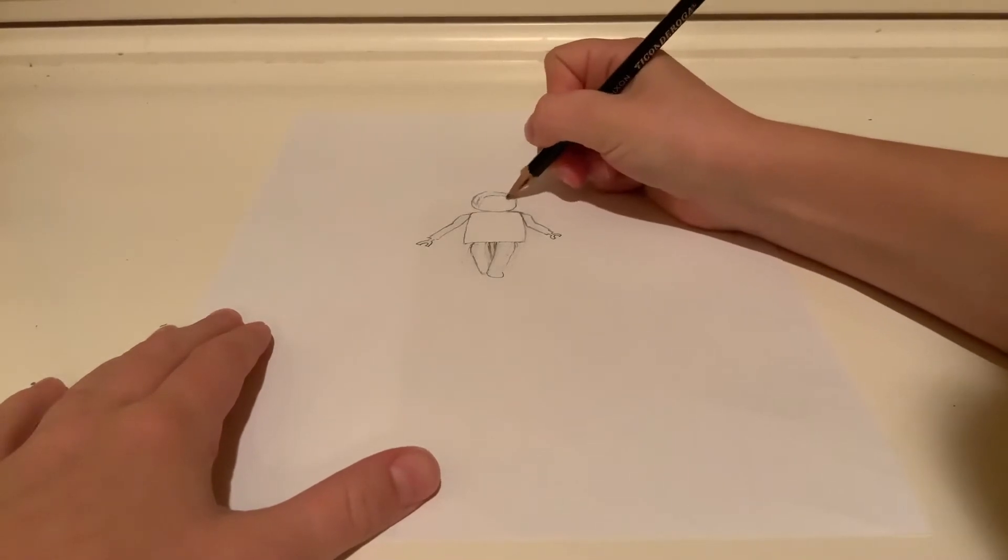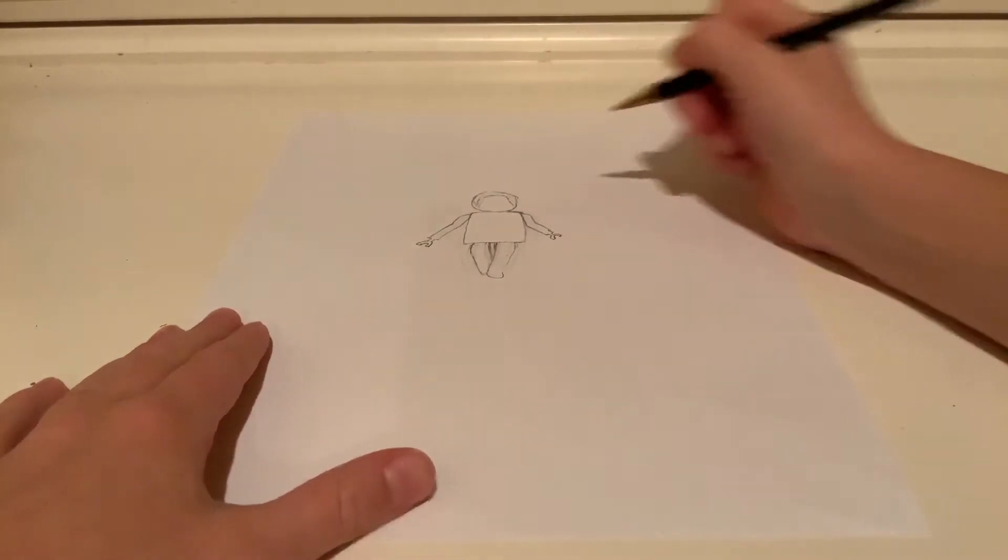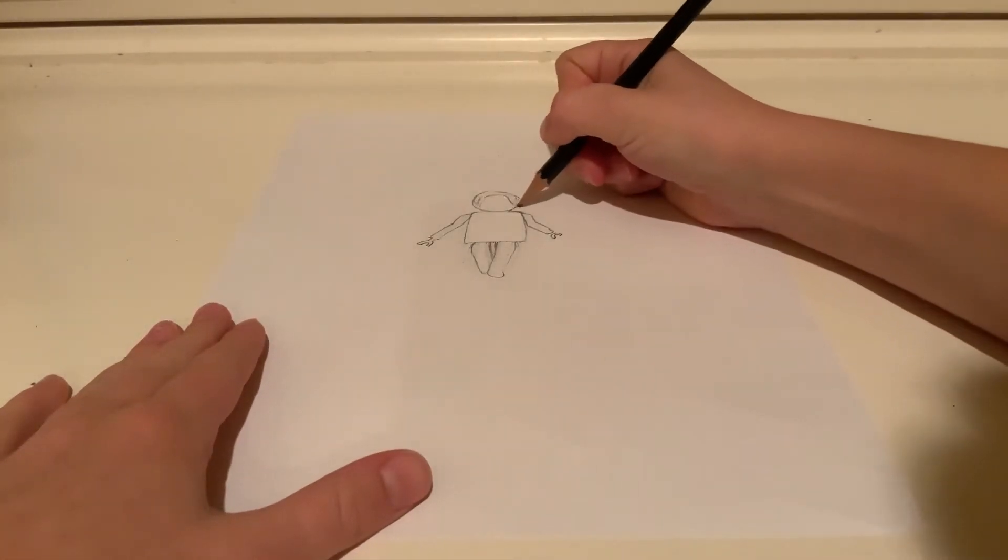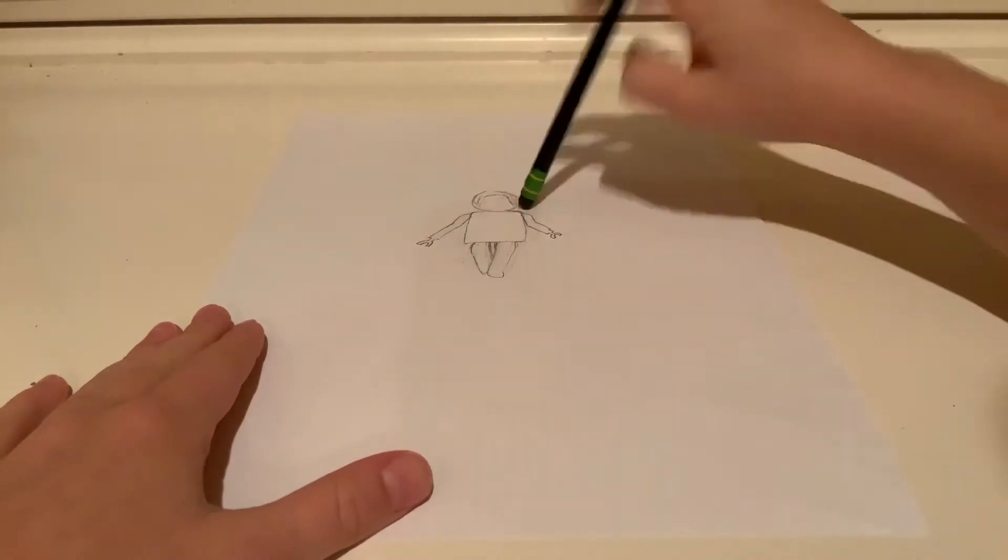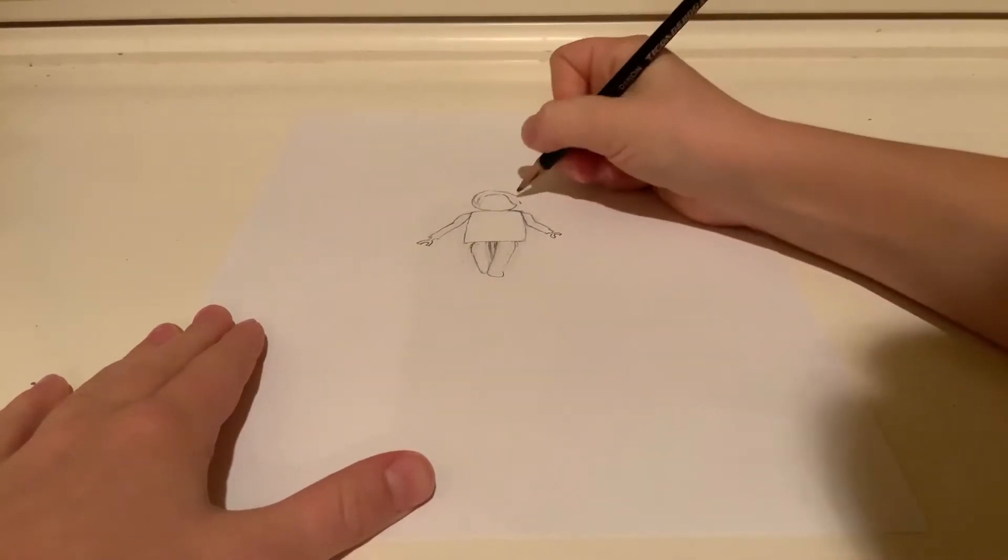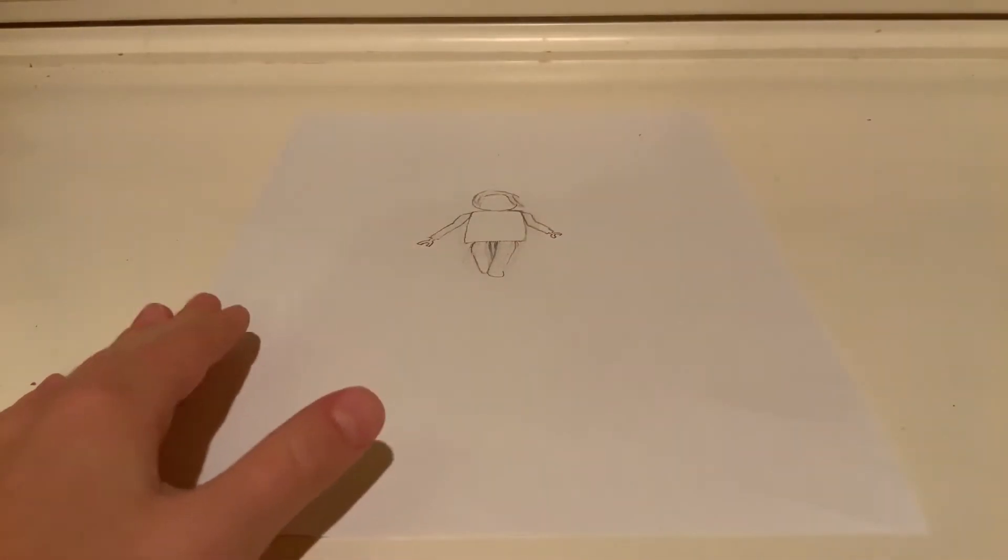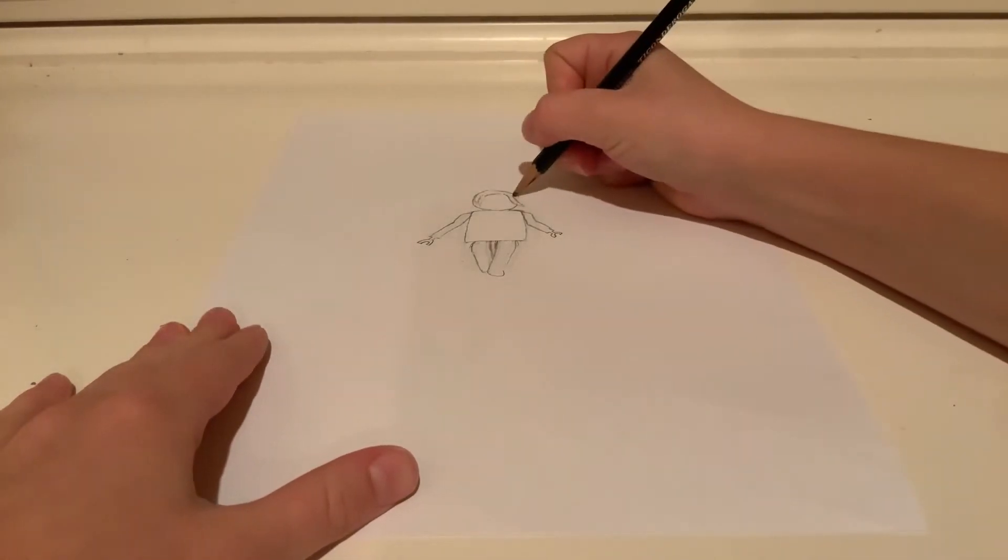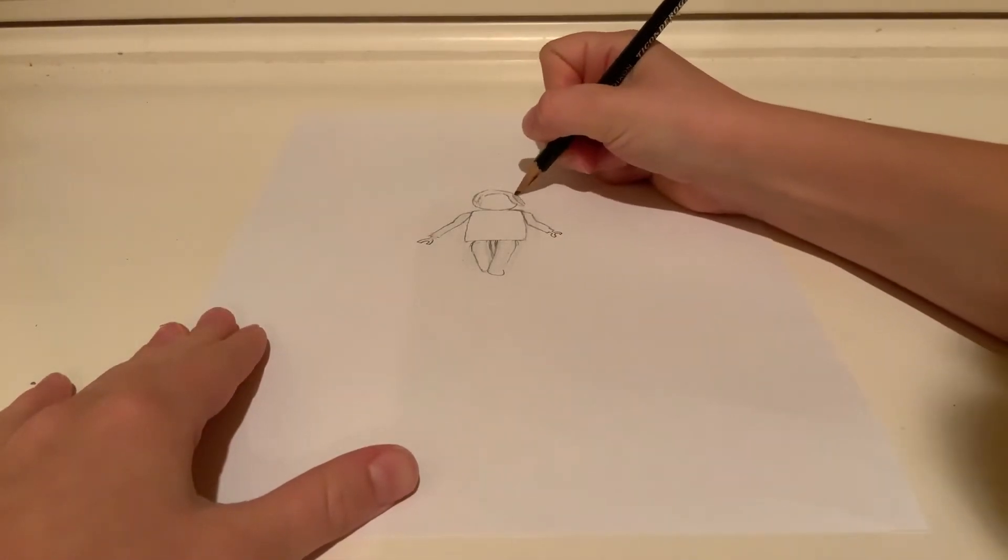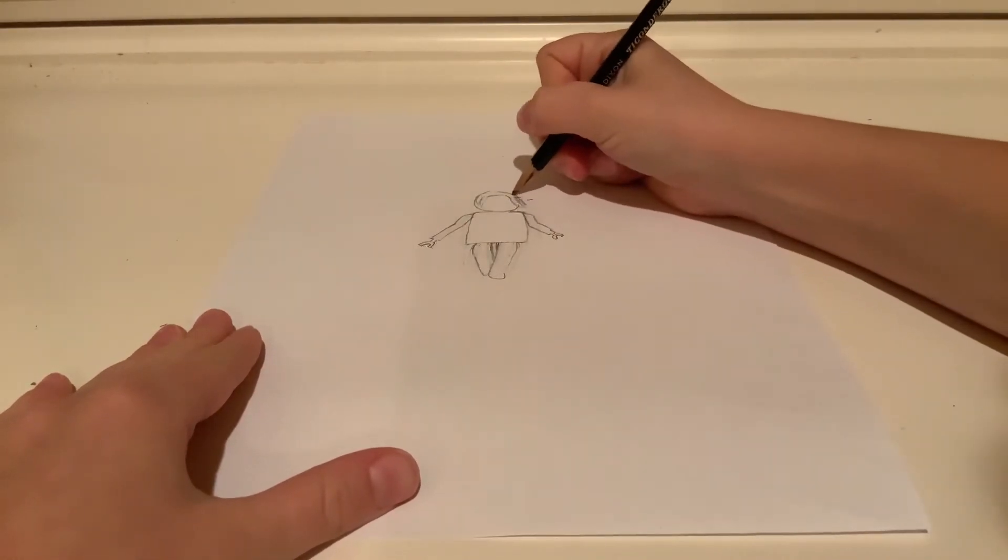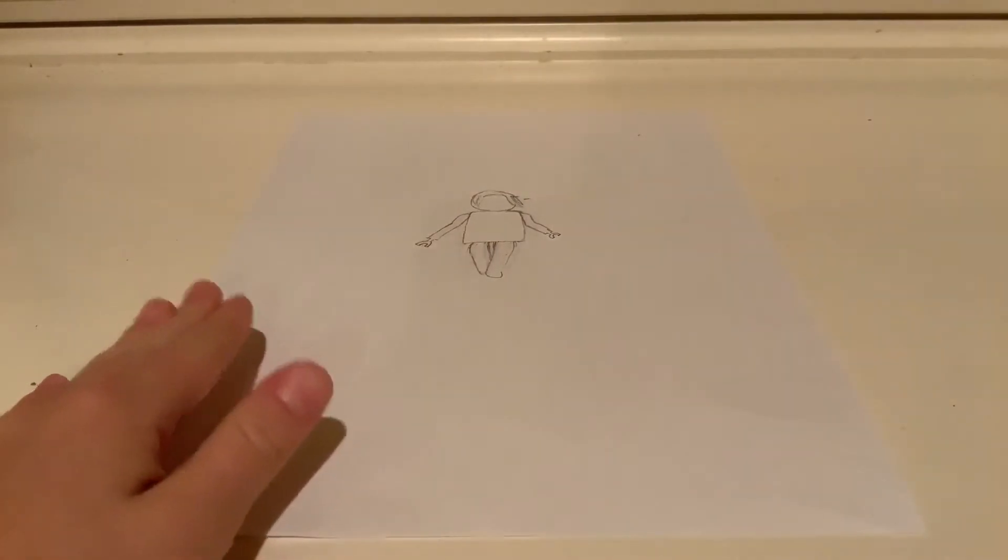And then the ponytail sort of goes into a curve there, and then you sort of get it to go out of the head. And then I'm going to do a shorter one. Right now, it sort of looks like a boy because we haven't really put all the hair on yet.